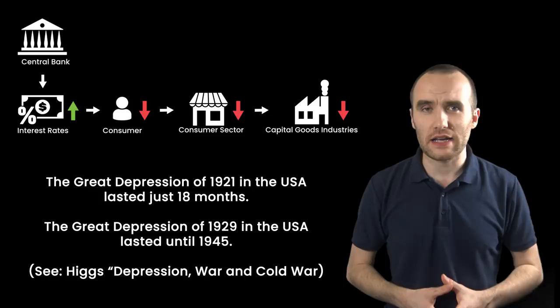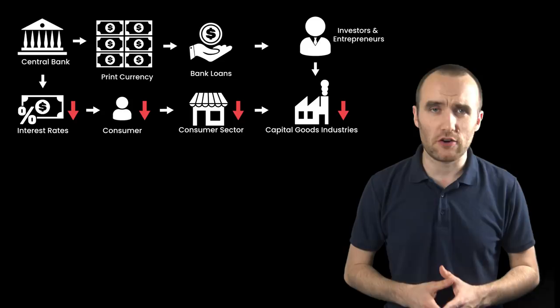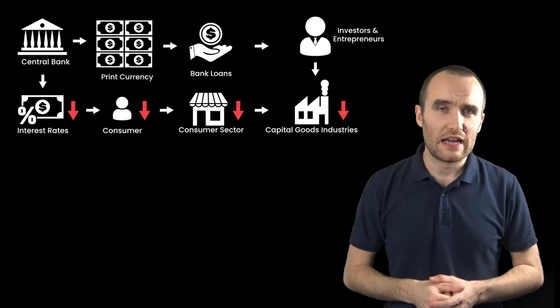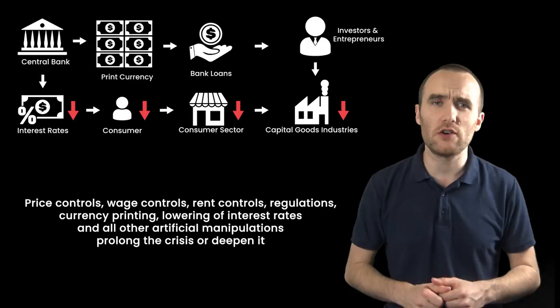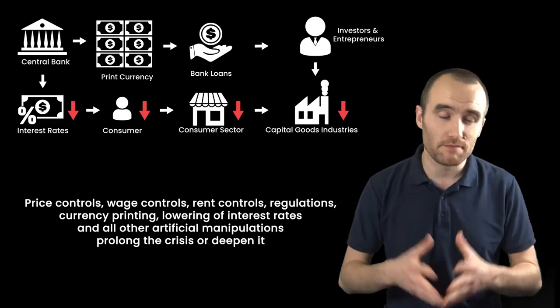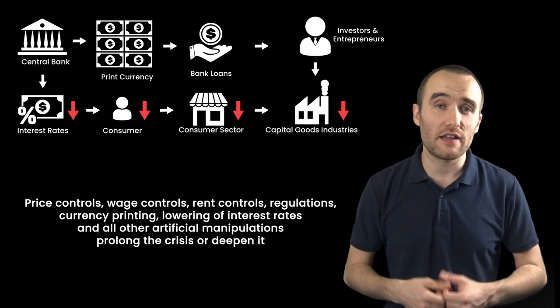But since the First World War, most governments have decided to fix what they deemed to be a broken economy. Yes, they created the problems in the first place, and then they decide to try and fix it. As you can imagine, this goes badly every single time. They try to prevent falling prices using price controls, or prevent falling wages through minimum wages, or continue to print currency, or continue to slash interest rates or keep them low, or give unemployment benefits, or start job creation schemes to produce things that nobody wants. Everything I've just listed will do nothing more than prolong the recession, deepen the recession, and generally make the situation worse.